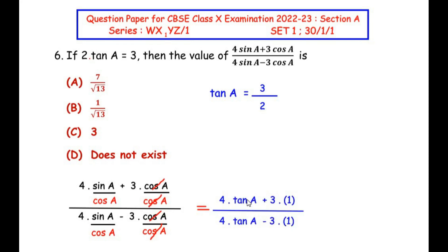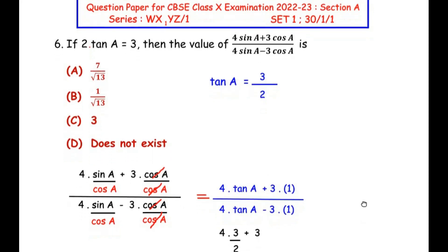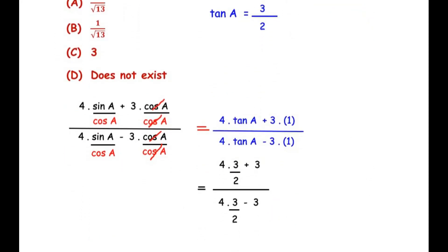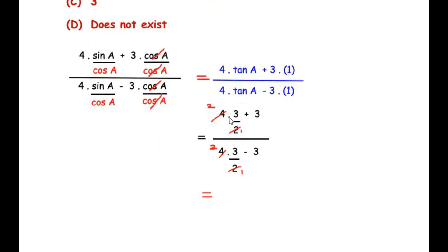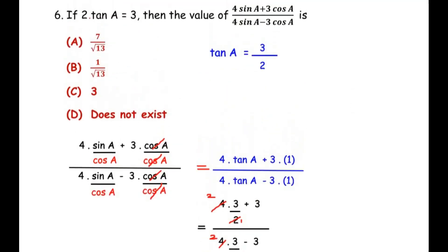Now substituting tan A = 3/2, we get (4 × 3/2 + 3) / (4 × 3/2 − 3). Simplifying: 2 divides into 4 giving 2, so the numerator is 2×3 + 3 = 6 + 3 = 9, and the denominator is 6 − 3 = 3. Dividing 9 by 3 gives us 3. So the answer is option C, that is 3.